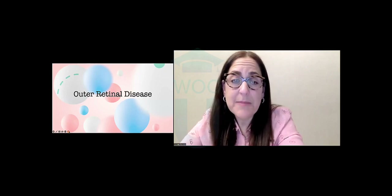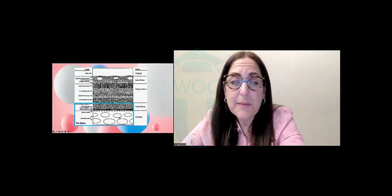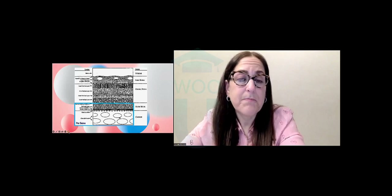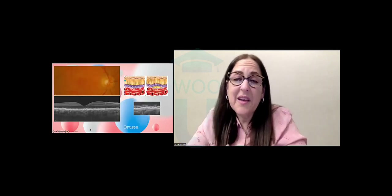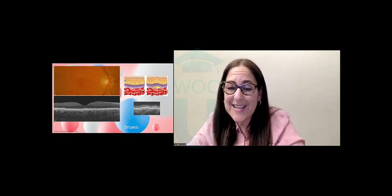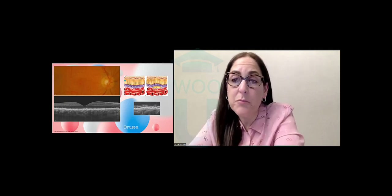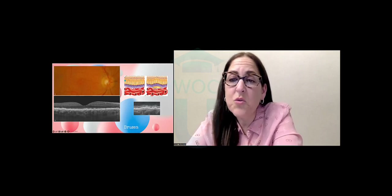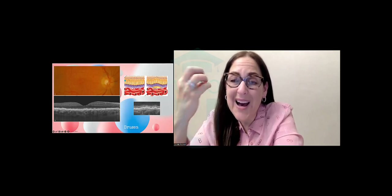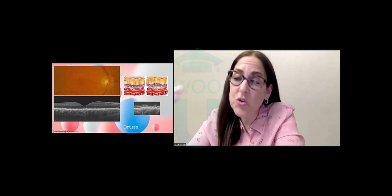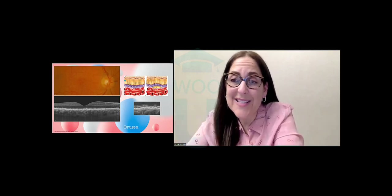For outer retinal disease, we're looking at photoreceptors, RPE, Bruch's membrane, and choroid — diseases like age-related macular degeneration. Starting with drusen: drusen is oftentimes mistaken for exudate. The way we make the differentiation is by looking at the layers. Remember that exudate lives in the outer plexiform layer. Drusen lives between RPE and Bruch's membrane. So when you see on OCT some hyperreflectivity between RPE and Bruch's membrane, that is too low down to be exudate — that indicates it is drusen.